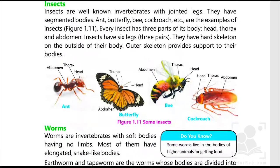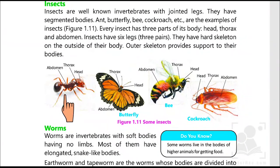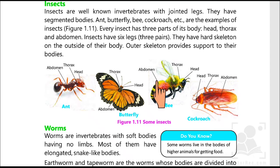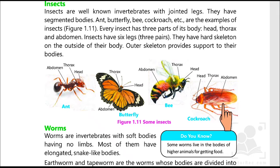Let's have a quick look at insects. They are invertebrates — they don't have backbones. They all have a segmented body: abdomen, thorax, and head. For example, a butterfly has abdomen, thorax, and head; a honeybee has abdomen, thorax, and head; and a cockroach has head, thorax, and abdomen — but there is no backbone in them.